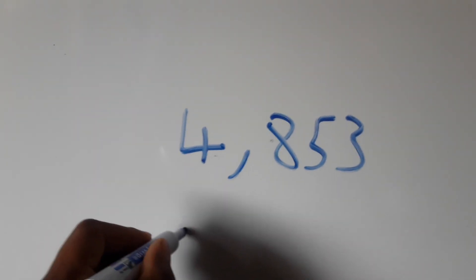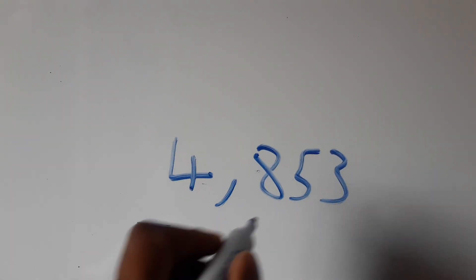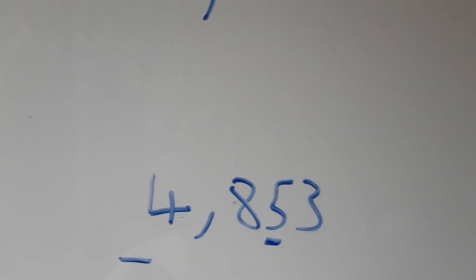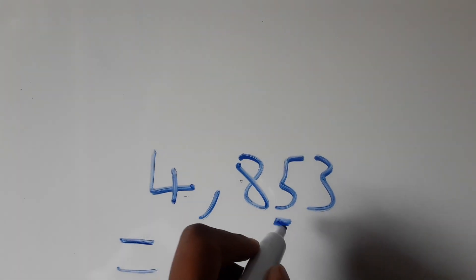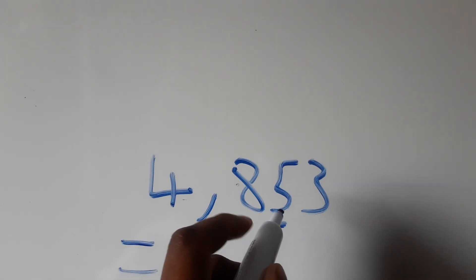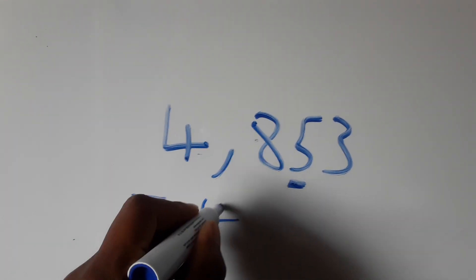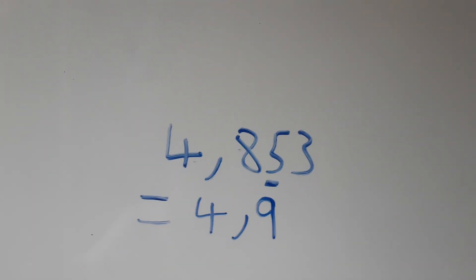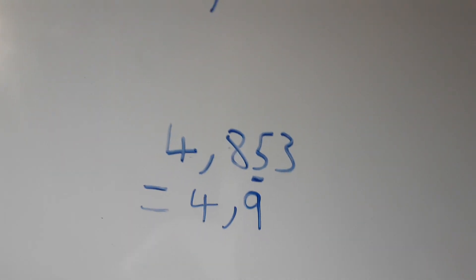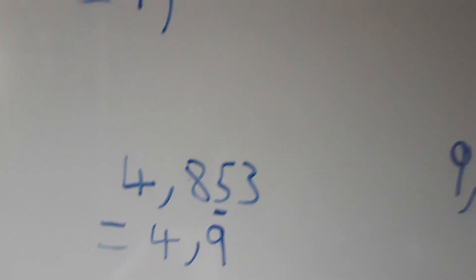Now we have the number 4.853. We are rounding off to one decimal place, so we look at five. Is five greater than four? Yes. Then we will change the first decimal digit, so our answer is going to be 4.9.